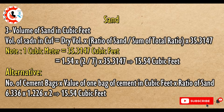Alternative method: number of cement bags multiplied by volume of one bag of cement in cubic feet, multiplied by ratio of sand. 6.336 × 1.226 × 2 equals 15.54 cubic feet.